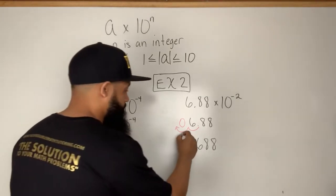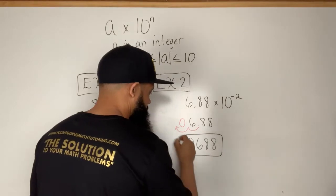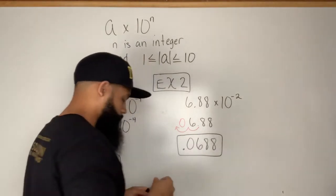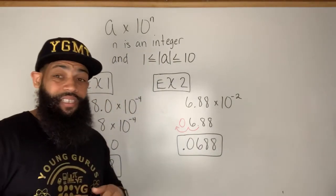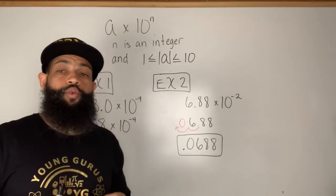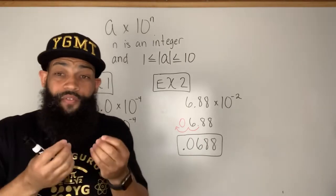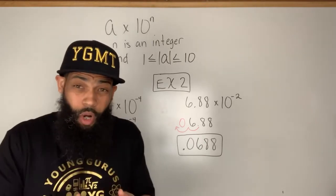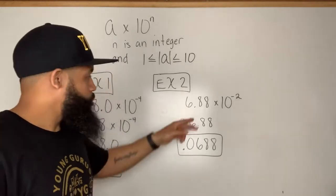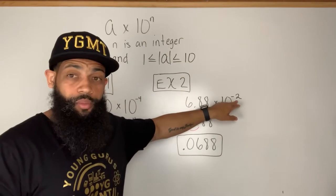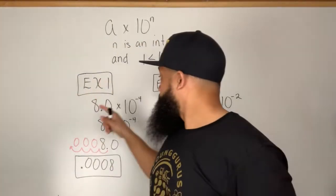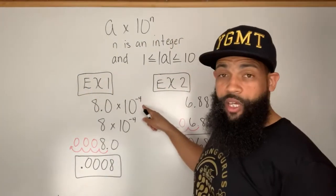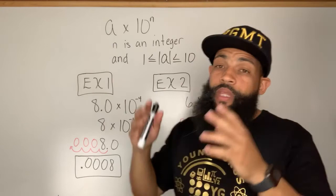So six hundred eighty-eight ten-thousandths is how we say that. That was scientific notation to standard form when we're talking about a very small number — in scientific notation, those are represented with negative exponents.